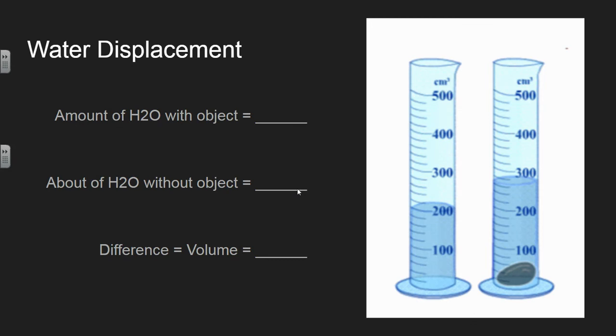Now, we can also use a graduated cylinder to measure the volumes of other objects that are maybe irregularly shaped. Let's say we've got a rock here that we want to measure the volume of. We can't just do length times width times height, because it's a weird shaped object. What we have to do is we have to do what's called the water displacement method. And the water displacement method allows us to measure the water level before and the water level after, and then the difference is the volume.